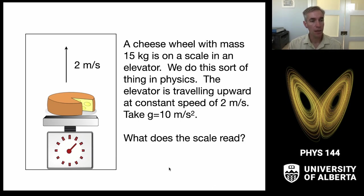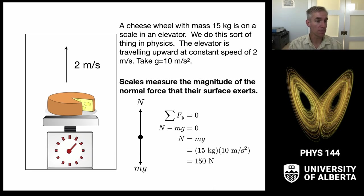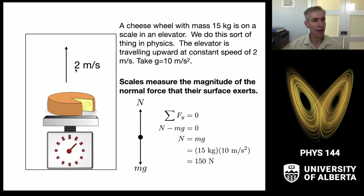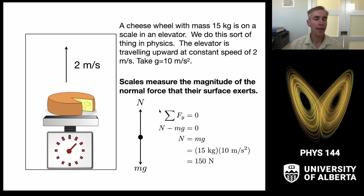Let's use the method. First, I'm going to define a y coordinate going upward. And therefore I have to ask: what is the acceleration? Well, it's a constant speed of two meters per second, so the acceleration is zero. And therefore, the sum of the forces in the vertical direction are zero.